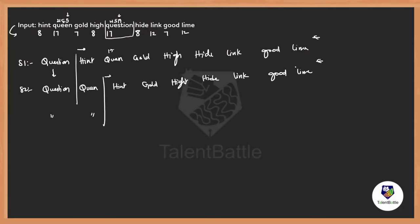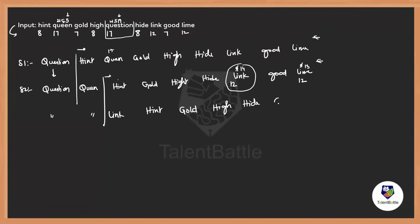Out of all the remaining, what is the next highest? If you observe: 8, 7, 8, 8, 12, 7, 8, 12. We have 12 and 12 as the highest, but I cannot decide because both are same. Here N is 14 and M is 13 — so link should be the highest, and link comes to the third place. The rest all goes to the next places: hint, gold, high, hide, good, and lime. Link is also fixed.